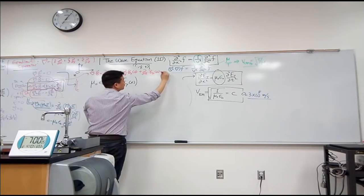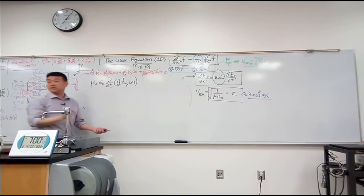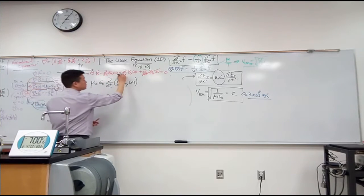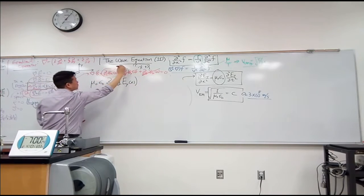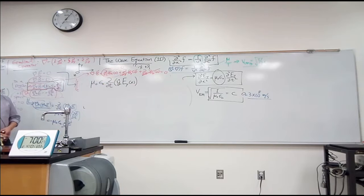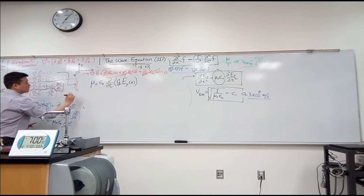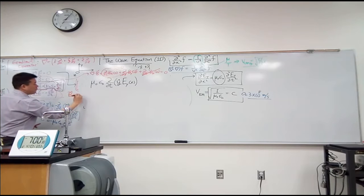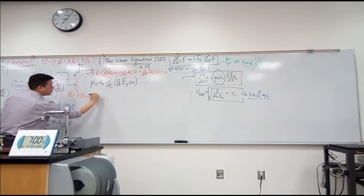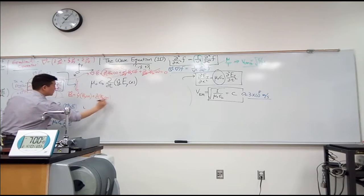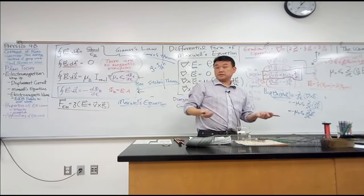Starting from the divergence of the magnetic field, writing it out in terms of components: the x-derivative of the x-component, the y-derivative of the y-component, and the z-derivative of the z-component — all only functions of x — and all of that equals zero. The z-derivative term is zero because it doesn't depend on z; the y-derivative term is zero because it only depends on x. So the x-component itself must also be zero. The magnetic field has no oscillating x-component, so both electric and magnetic fields are transverse in an electromagnetic wave.